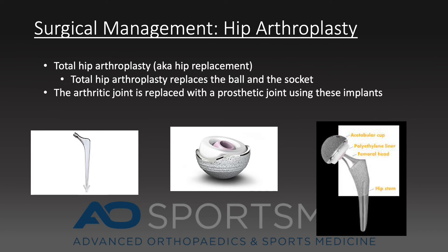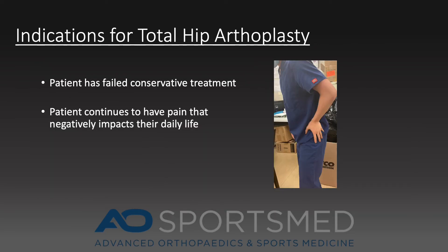For moderate to advanced osteoarthritis of the hip, total hip replacement is the best option. Total hip replacement replaces both the ball and the socket of the joint. The indication for total hip arthroplasty is a painful hip with x-ray findings of arthritis in a patient that has failed conservative management. Once the pain negatively affects a patient's activities of daily living, they are a good candidate for a hip replacement.